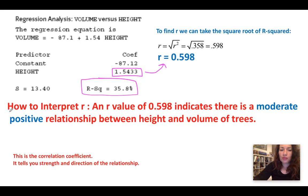In this case, how do we interpret r? We can say an r value of 0.598, which is what we got when we got the square root, indicates there is a moderate positive relationship between height and volume of trees. When we say height and volume of trees, we're talking in context. When we're talking about r, we always want to talk about the strength and the direction. So the strength is moderate, and the direction is positive.